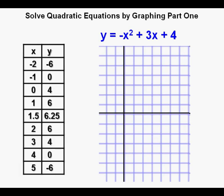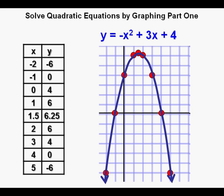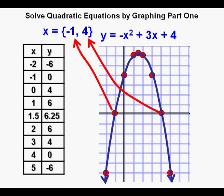Joe then uses the function to create a table. Joe plots the points. Now he draws the curve through the points. He sees the two points where the function crosses the x-axis at x = -1 and at x = 4 and writes the solutions here.